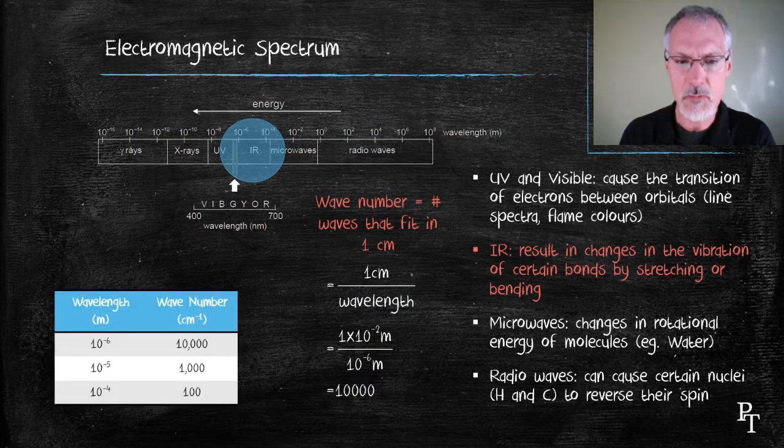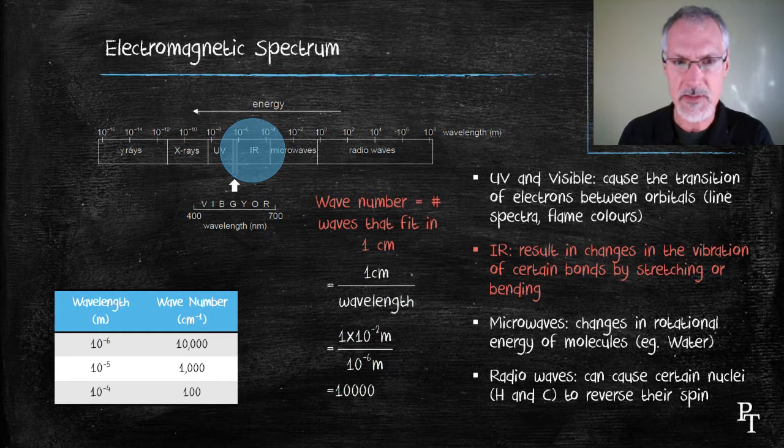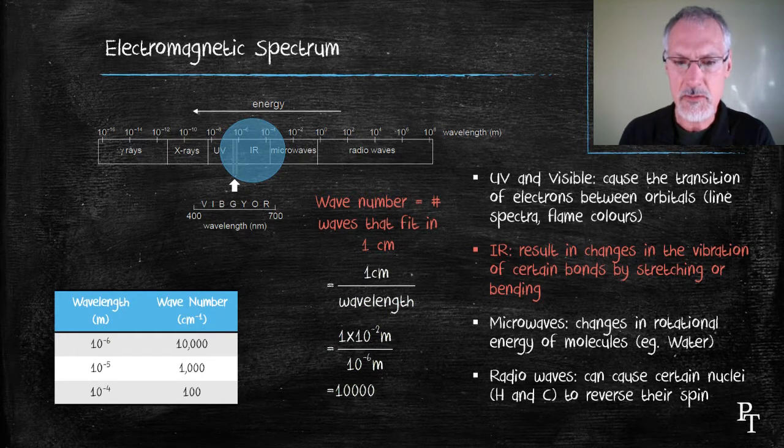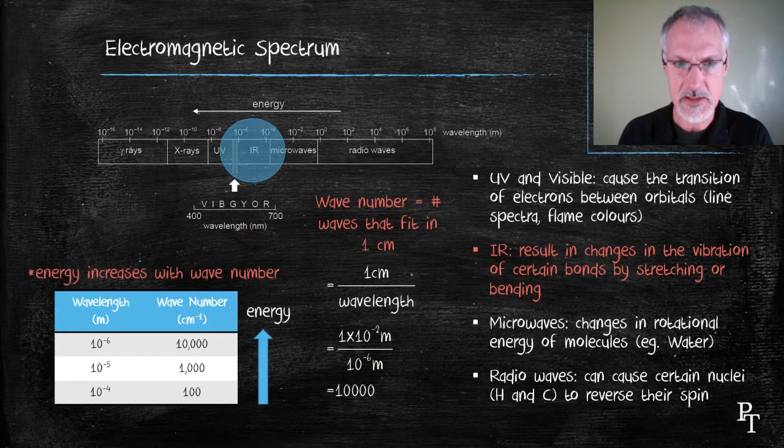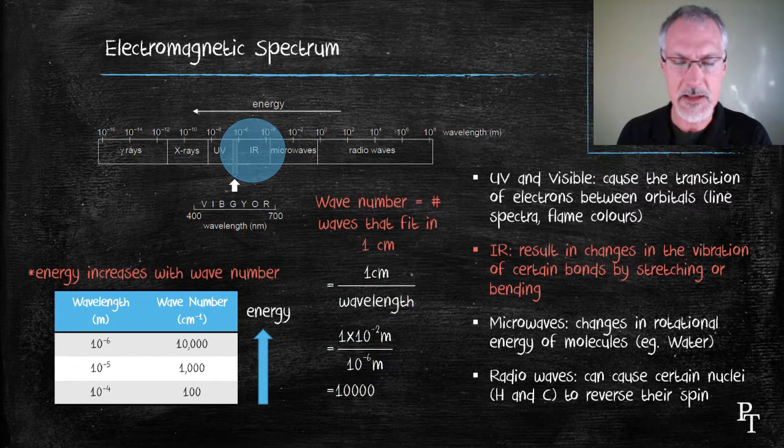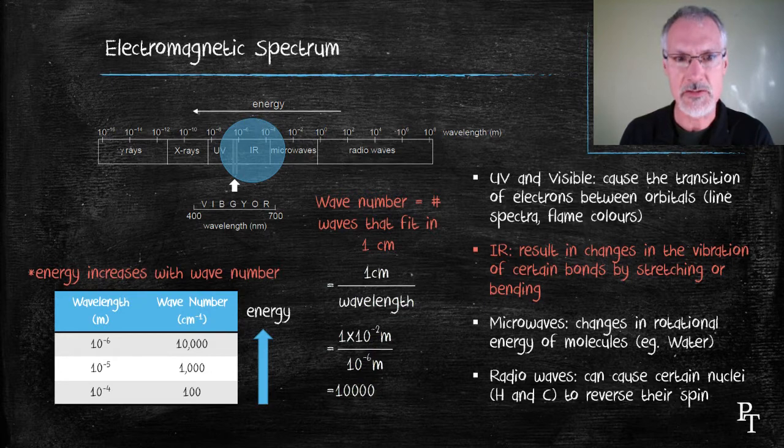Here we can see how the wave number is affected by the wavelength. But what I would like you to note is as the wave number increases, the amount of energy increases. So remember that increasing wave number means increasing energy.